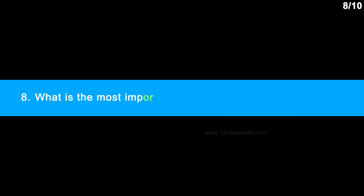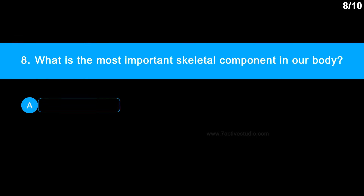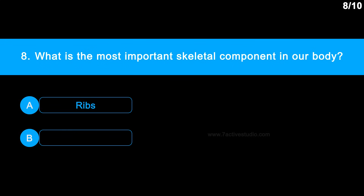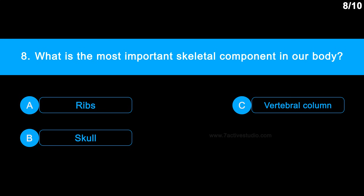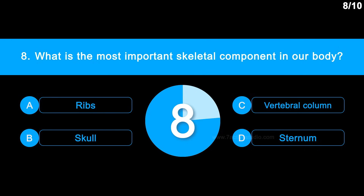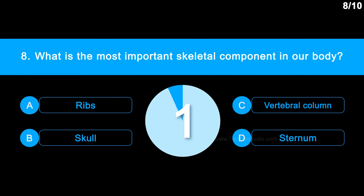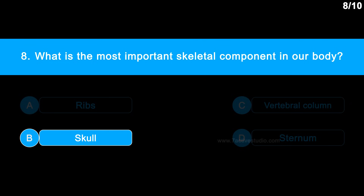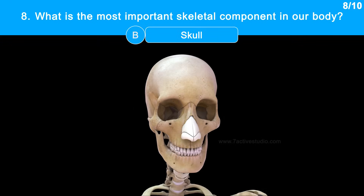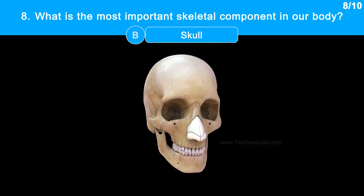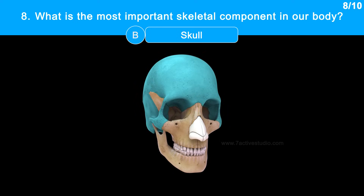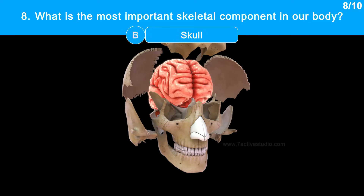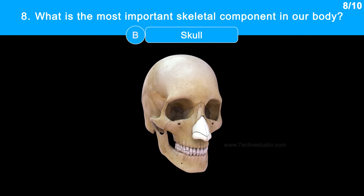Question 8: What is the most important skeletal component in our body? Option A: ribs. Option B: skull. Option C: the vertebral column. Option D: sternum. The correct answer is option B, skull. The skull is the most important bone in our body, made up of different bones of the head and face. Some of these bones protect our brain, whereas others make up the structure of our face.